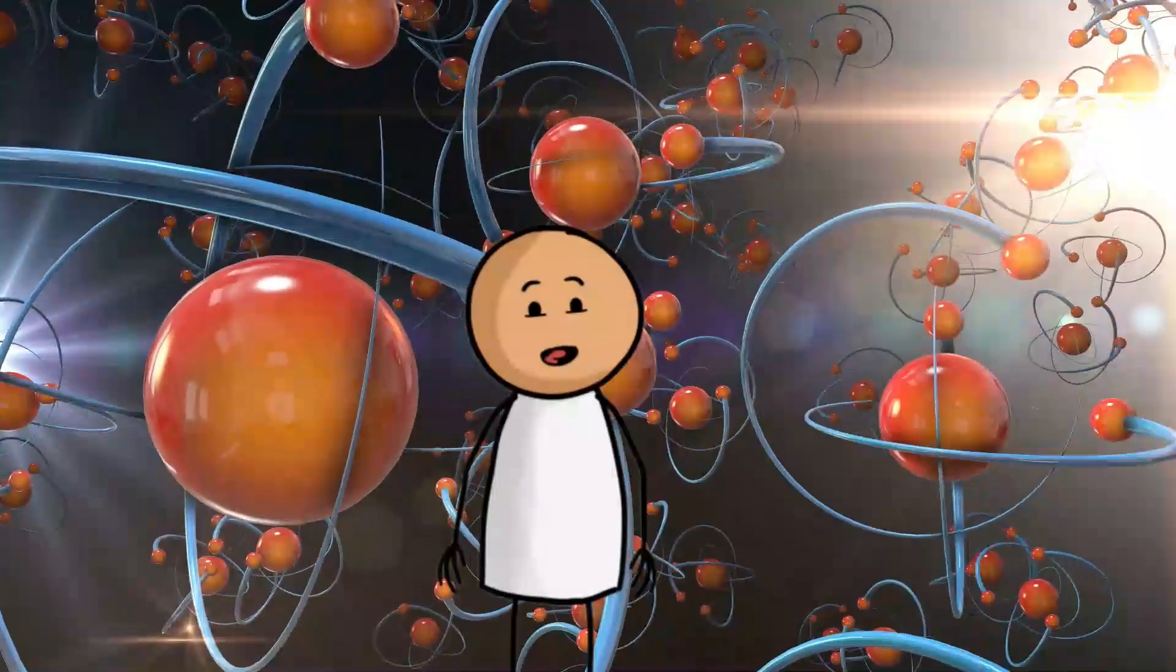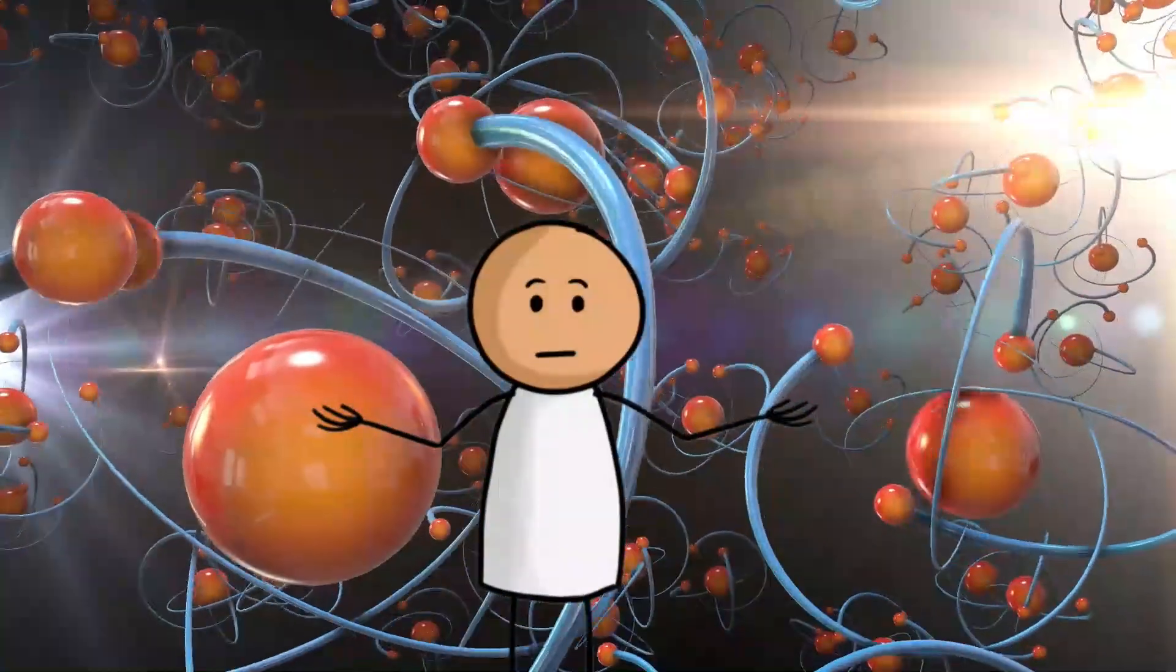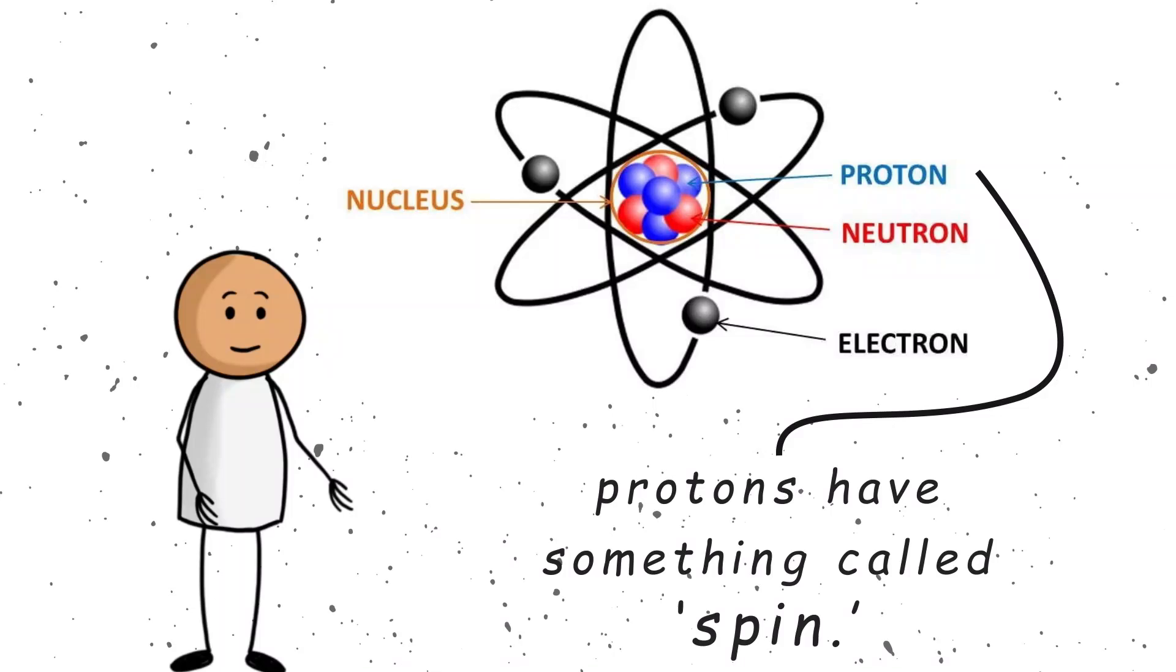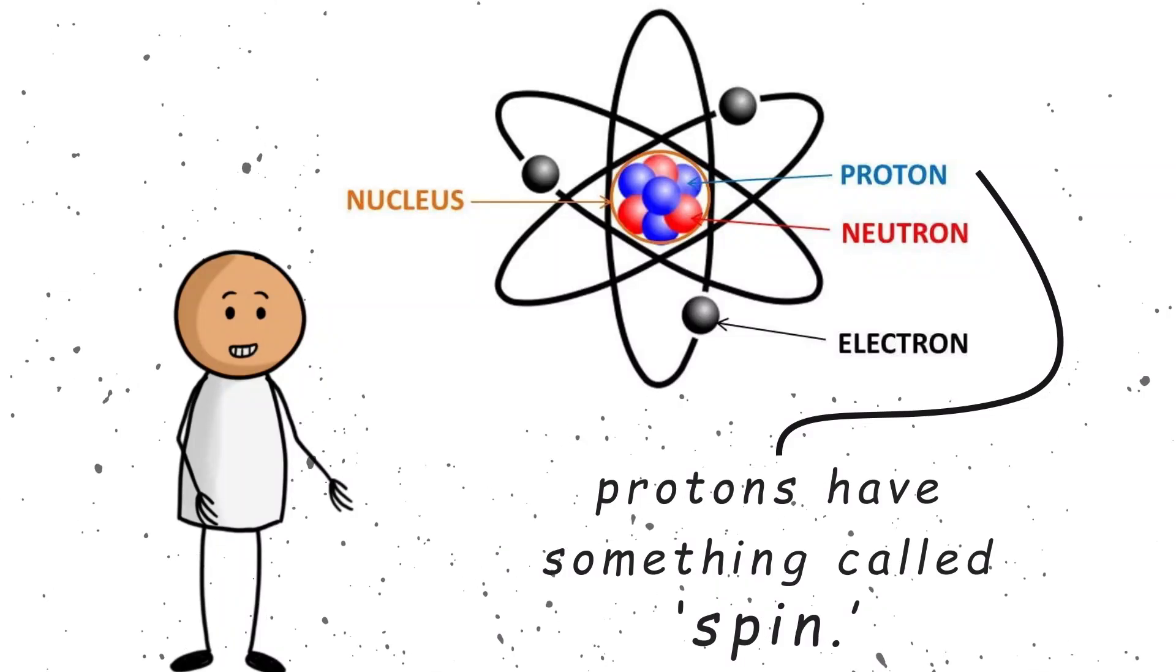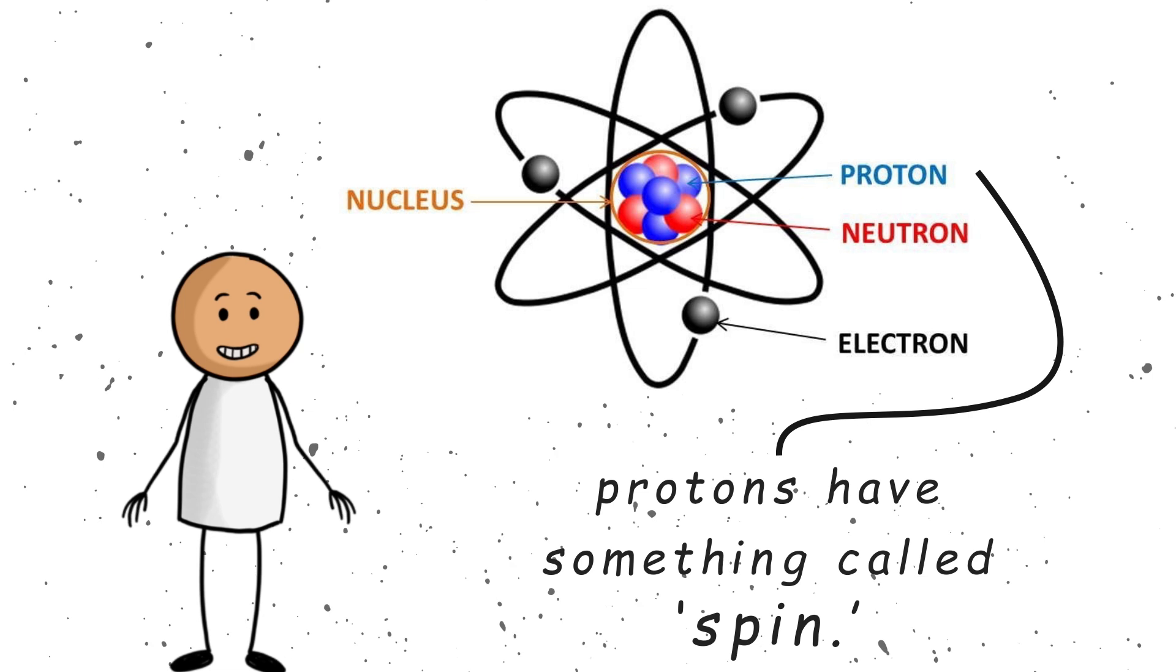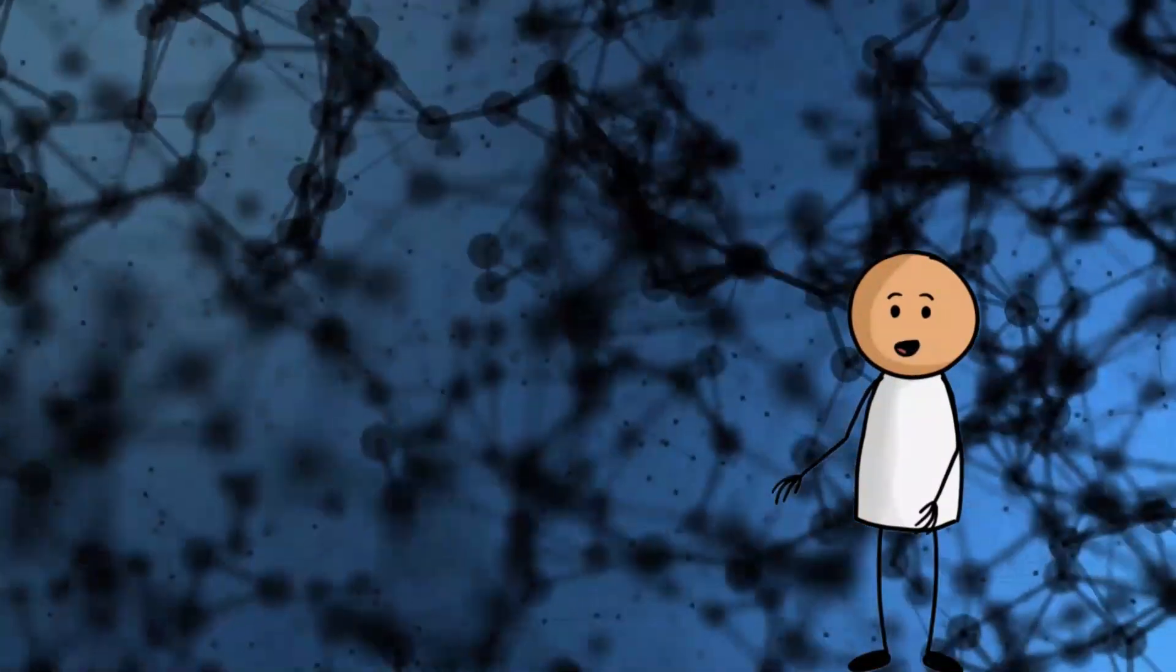Protons are these little particles that live in the nucleus of an atom. They are like the building blocks of everything around us. Your coffee mug, your phone, even you. And just like spinning tops, protons have something called spin. But before you start imagining them doing pirouettes, Proton Spin is a quantum property. It is more like a built-in twist or rotation that gives protons some of their magnetic personality.